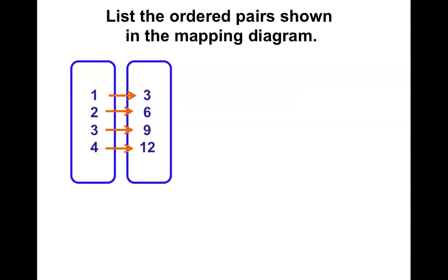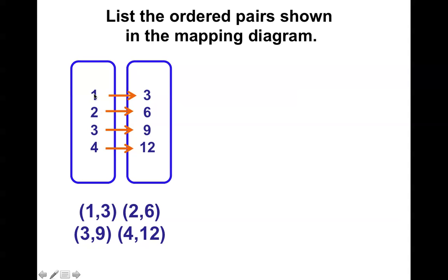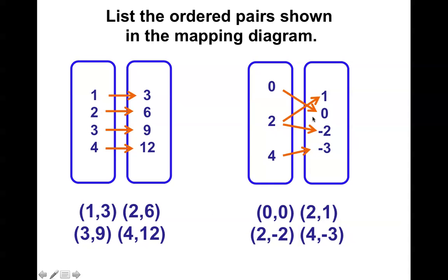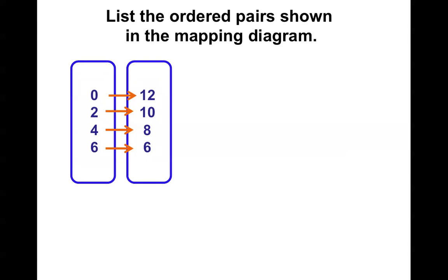Can you make the ordered pairs from this mapping diagram? We get the pairs: 1 connects with 3, 2 connects with 6, 3 connects with 9, and 4 connects with 12. They don't always have to be straight arrows — notice these are kind of all over the place, but notice how they connect. The 0 connects with 0, the 2 connects with 1, the 2 connects with negative 2, and the 4 with negative 3.